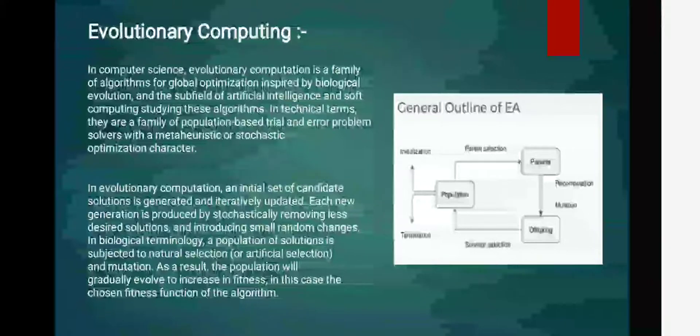Population means the collection of all the possible solutions. Individually those solutions can be called as candidate solution also or individual solution. Those are generated by using random variation, and for that purpose we can use different operations as I told before, mutation, crossover, recombination, etc.